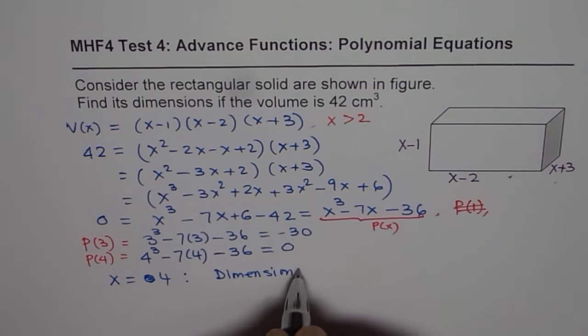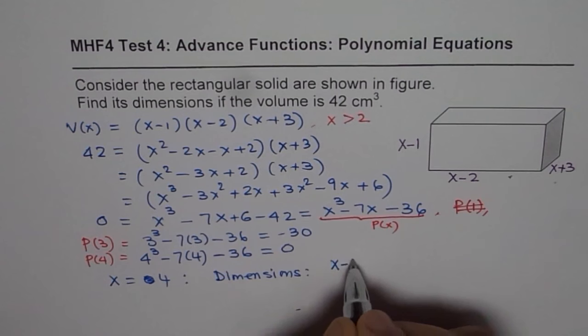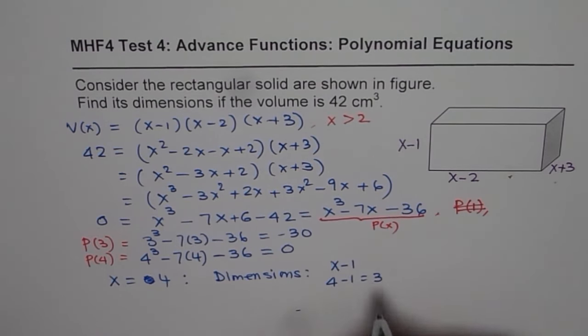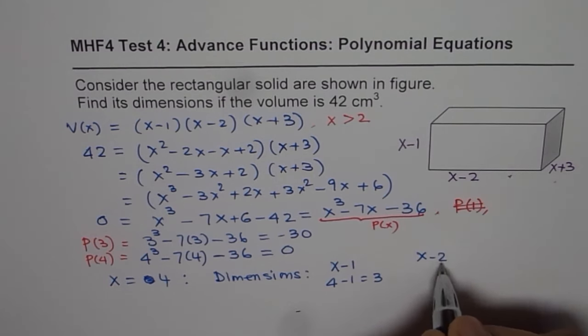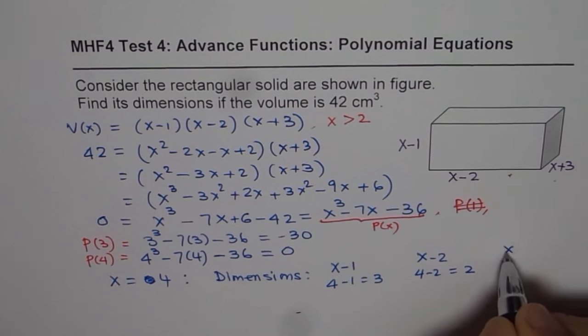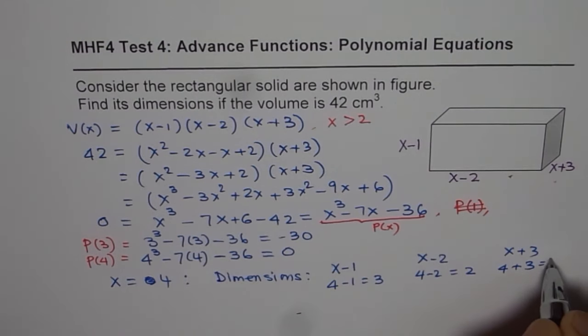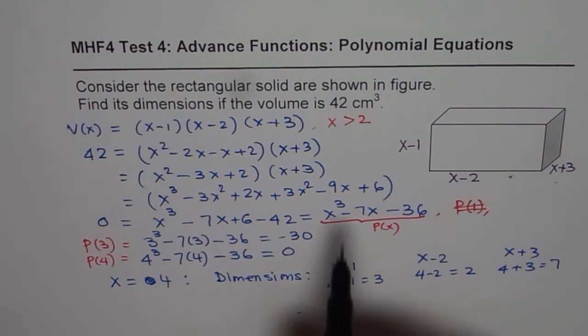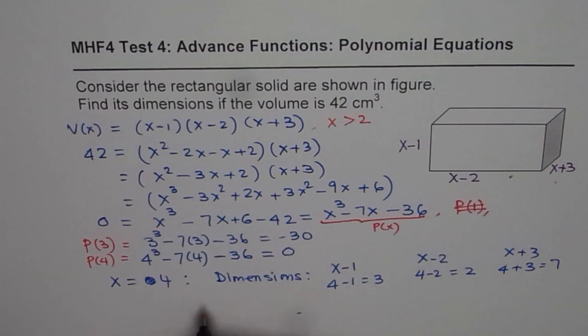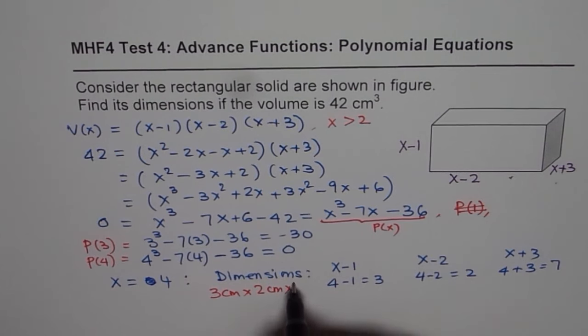And therefore the dimensions should be what? Dimensions should be x minus 1. So x minus 1 means 4 minus 1. That is 3. And then we have x minus 2. x minus 2 means 4 minus 2, which is 2. And we have x plus 3, that is 4 plus 3, which equals to 7. And from here, we can write down the dimensions are, unit is centimeters. So we will write 3 centimeter by 2 centimeter by 7 centimeter.